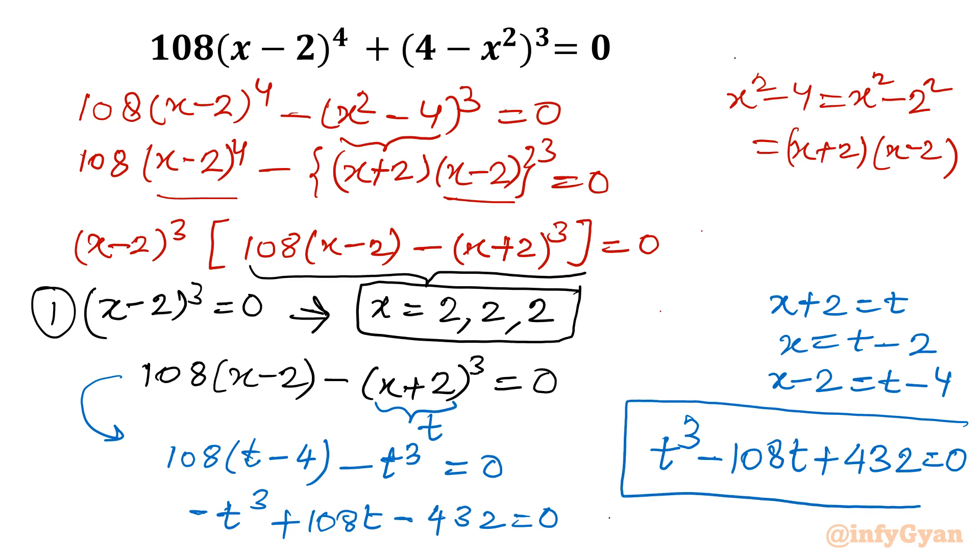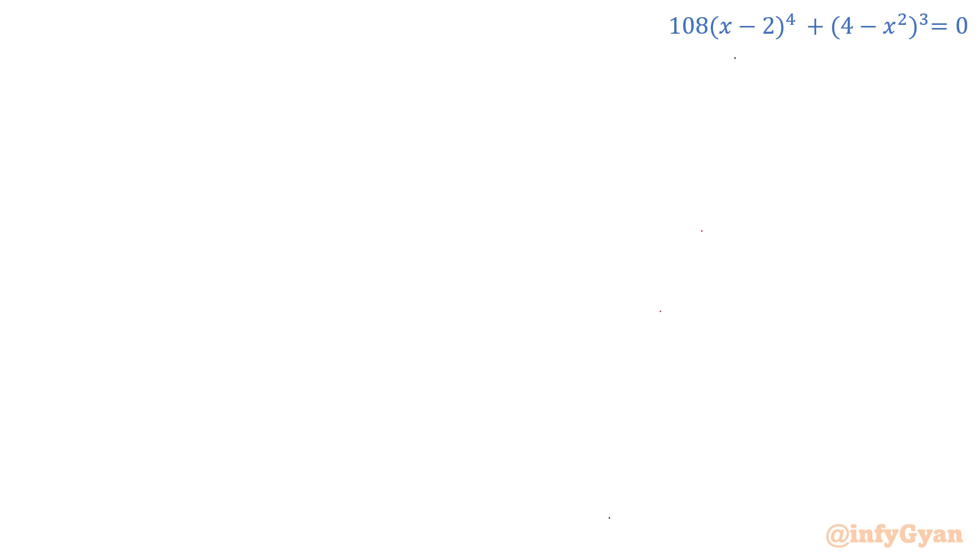I am writing -t³ plus 108t minus 432 equals 0, or multiplying by minus sign the equation will come out t³ minus 108t plus 432 equals 0. Now instead of solving that equation, we will solve this equation t³ - 108t + 432 = 0.